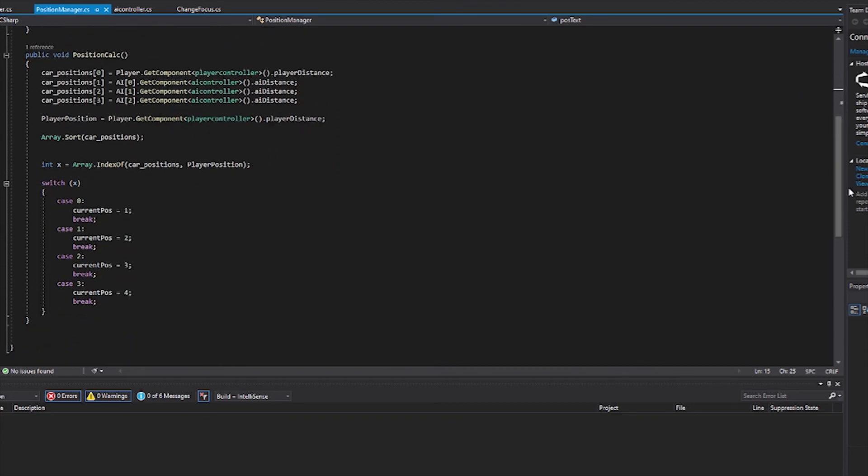Create a function for the logic we discussed earlier, then assign the player and the AI to the array that holds all the players' distances. Then assign the player distances to the variable to hold the player's current distances, then sort the array. Check for the index of the player's distances value, use a switch statement to check for the position of the players.